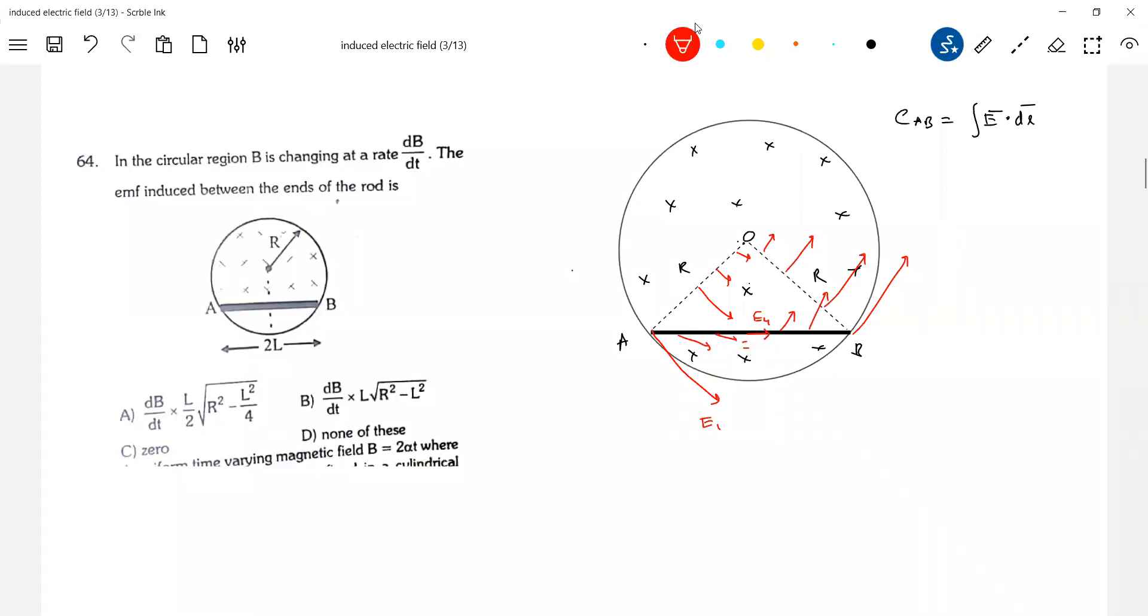Don't show tangent. It will be in parallel, it will be like this. Look at that angle - angle between E bar and DL. So where is the DL? DL will be here, this is a DL.